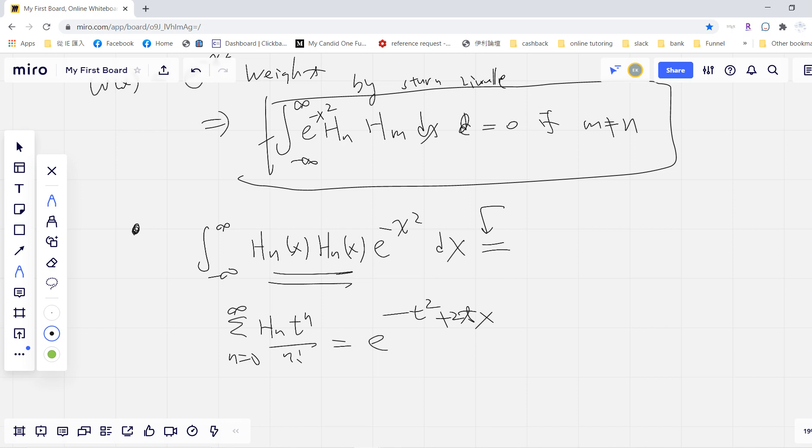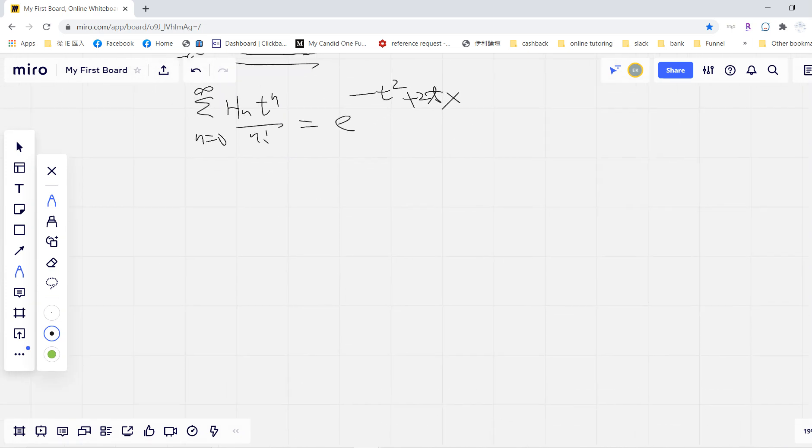Okay, so in order to do this, then we can just directly compute. So let's say we take two of it. Sorry, it's s and t. We take one is s, one is t. Then we have the sum over n and m of H_n(x)t^n/(n!) times H_m(x)s^m/(m!) times e^{-x^2}, and then we do a dx.